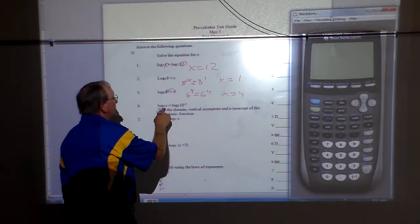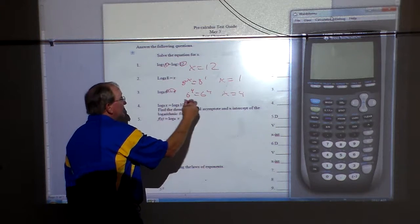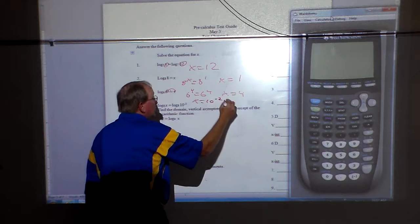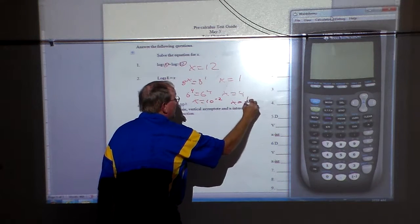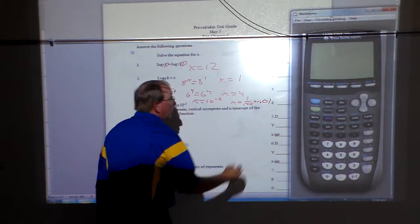And this one right here is very much the same. Log base 8 of 8, this makes us x, means that we're equal to, that's log base 8, 10 to the negative 2, which is the same thing as x over 100, or for those that like decimal, 0.01.